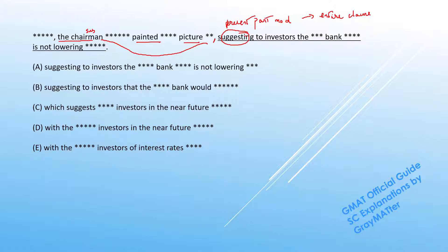So who's suggesting? The chairman is suggesting. Now this present participle modifier at the end of the clause can suggest two types of meaning.